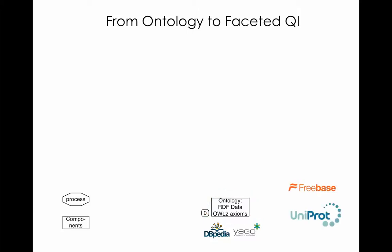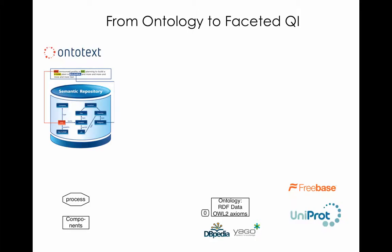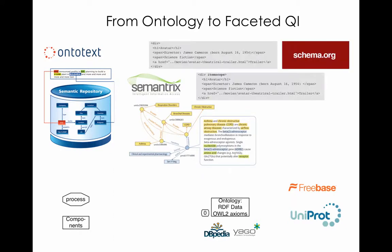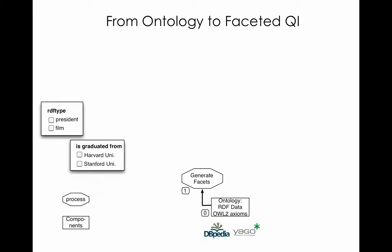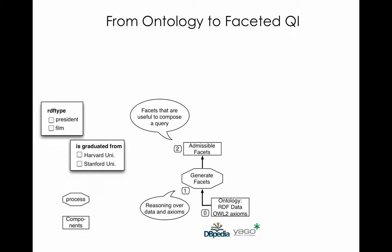The input could also be a set of semantically annotated documents where annotations are coming from Ontotext, Schema.org, and so on. The next step of the process is to generate facets — for example, RDF type and 'graduated from' facets. Computation of facets is done via reasoning over RDF data and OWL2 ontologies. This process returns facets that are useful for query composition. We call them admissible facets.